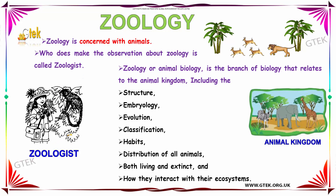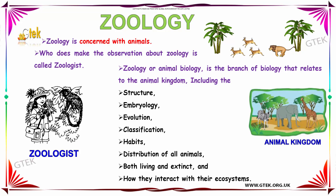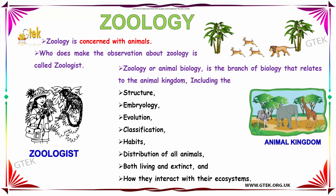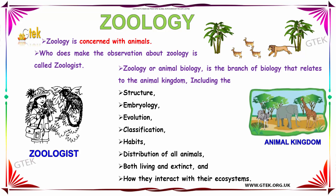Zoology, or animal biology, is the branch of biology that relates to the animal kingdom. This includes the structure, embryology, evolution, classification, habits, and distribution of all animals, both living and extinct, and how they interact with their ecosystem.